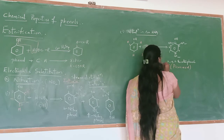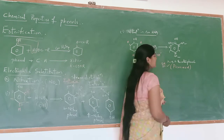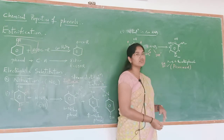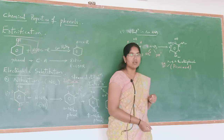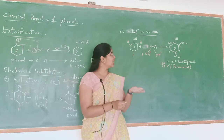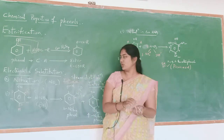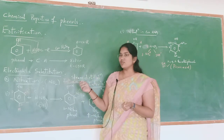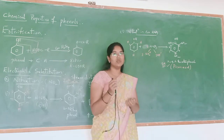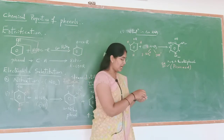So what is the IUPAC name of picric acid? That is 2,4,6-trinitrophenol. Reaction with concentrated HNO3 gives 2,4,6-trinitrophenol. Reaction with dilute HNO3 gives a mixture of 2-nitrophenol and 4-nitrophenol. And next, the electrophilic reaction is halogenation.